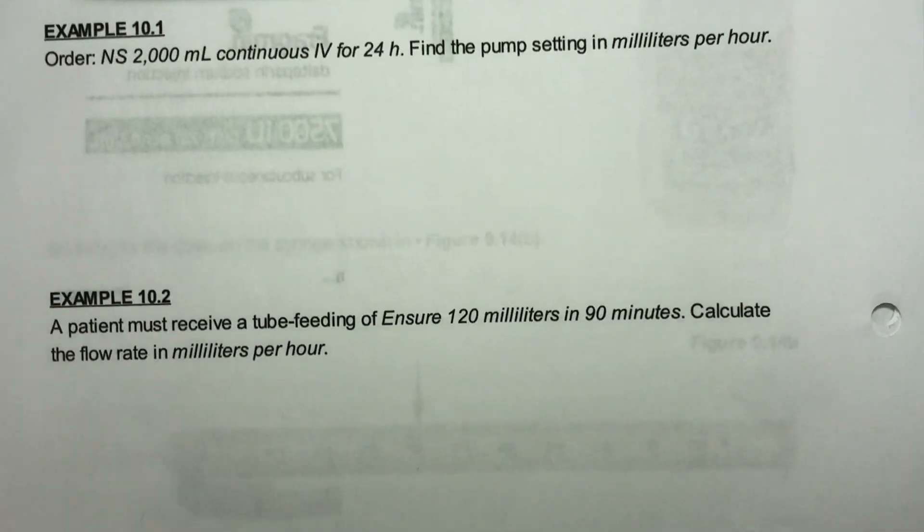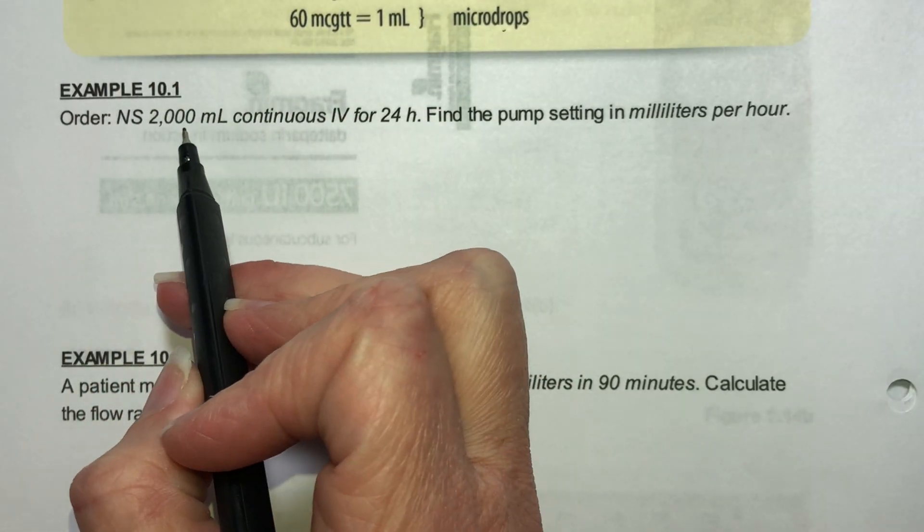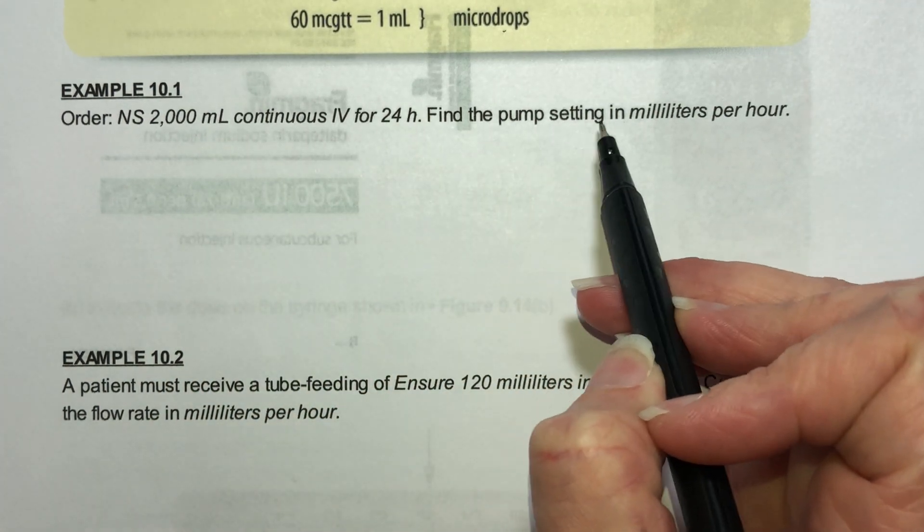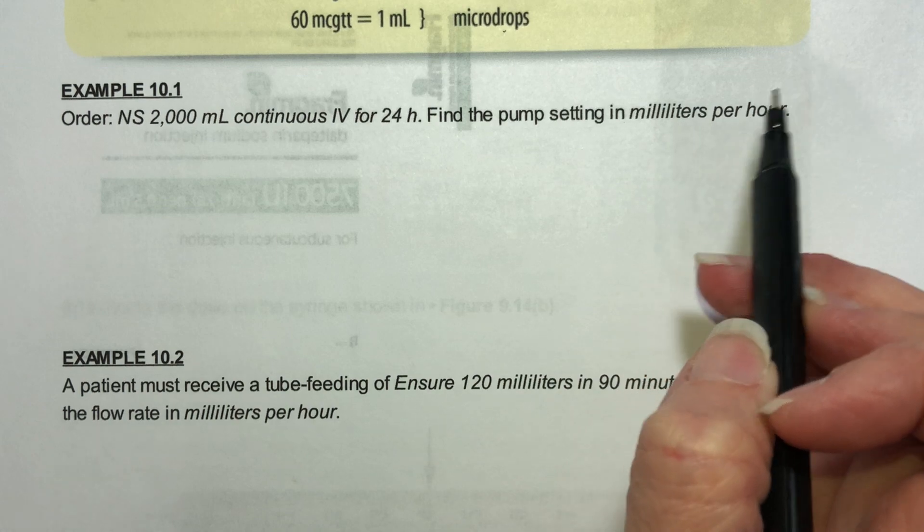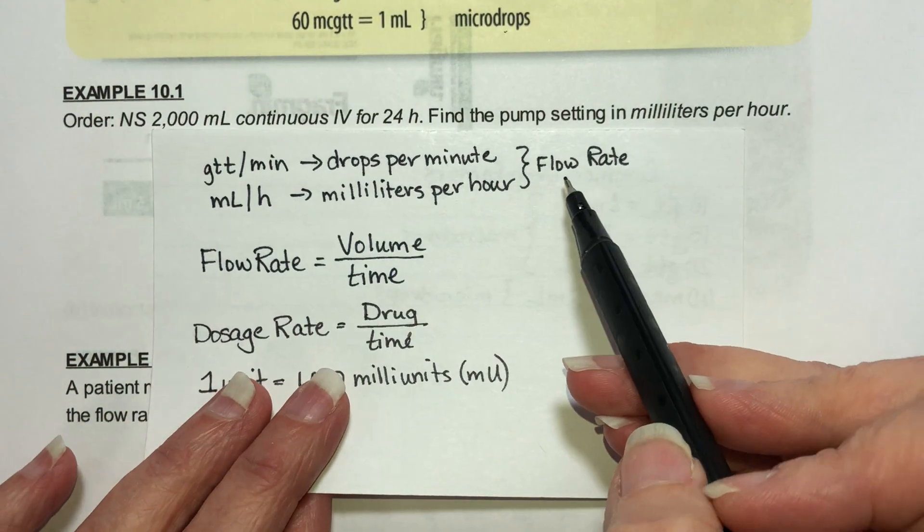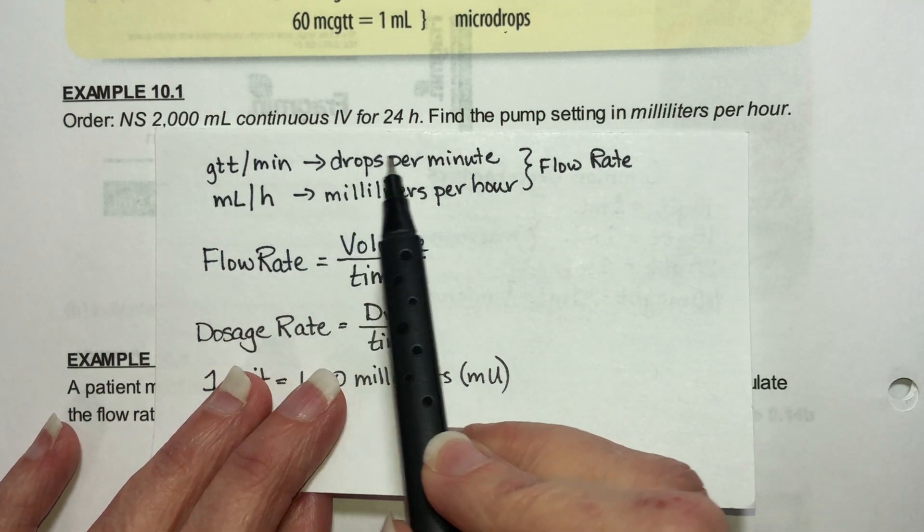Let's look at this first problem. The order is for 2,000 milliliters continuous IV for 24 hours. Find the pump setting in milliliters per hour. Most flow rates are given in either milliliters per hour or in drops per minute.